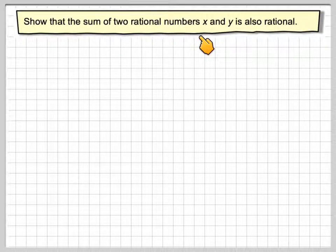Show that the sum of two rational numbers x and y is also rational. We need to know what a rational number is.